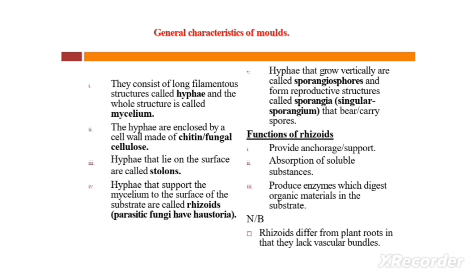Now, what are the general characteristics of mold as an example of Kingdom Fungi? Number one, they consist of long filamentous structures called hyphae, and the whole structure is called mycelium. The hyphae are enclosed by a cell wall.